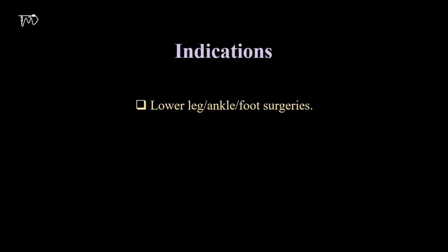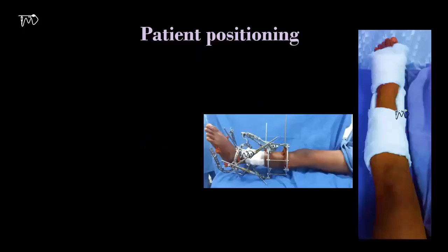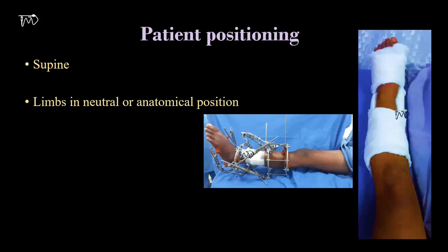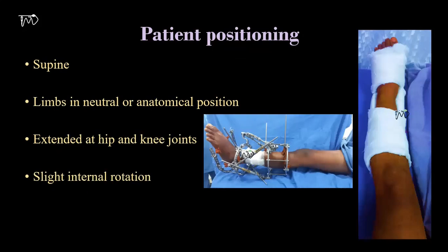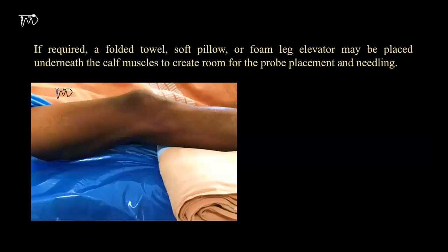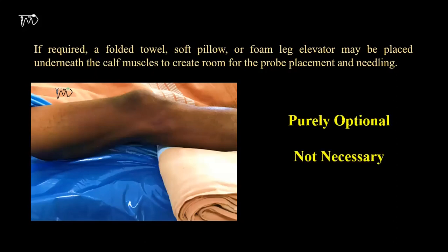Like other approaches of popliteal sciatic block, CAPS block can be used for regional anesthesia or analgesia for lower leg, ankle, or foot surgeries. Along with femoral or saphenous nerve block, it can provide complete analgesia for various below-knee lower limb procedures. The patient is placed in supine position with the limb in the neutral or anatomical position, extended at the hip and knee joints. Sometimes slight internal rotation may be needed, which patients can do themselves without any external assistance. A folded towel, soft pillow, or foam elevator may be placed underneath the calf muscle to create room for probe placement and needling, but this is purely optional and not required at all.